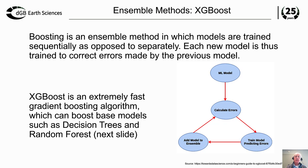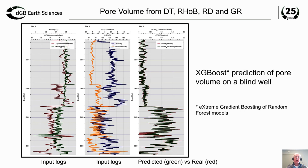Another ensemble method is boosting. This is a method in which models are trained sequentially, as opposed to separately, so each model is trained to correct for errors made in the previous models. XGBoost is currently the most popular boosting algorithm — an extremely fast gradient descent boosting algorithm operating on decision trees and random forests. We have implemented this in the machine learning plugin to predict logs from other logs. For example, the input consists of RHOB, DT, resistivity (RD), and gamma ray logs, and the output is pore volume or porosity, predicted by XGBoost.